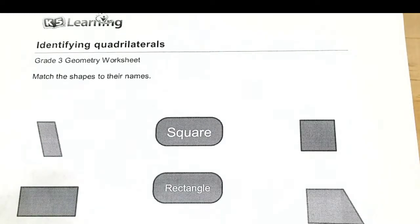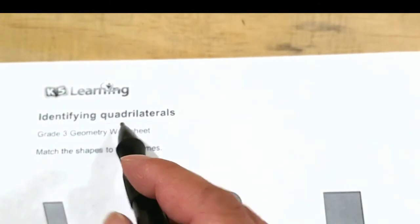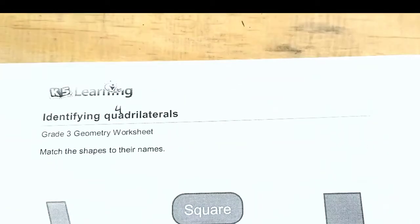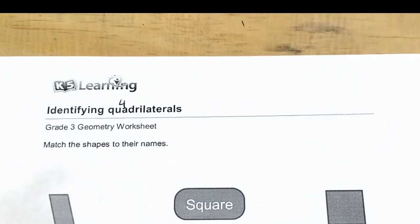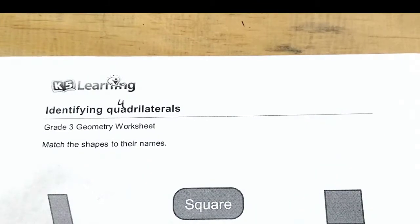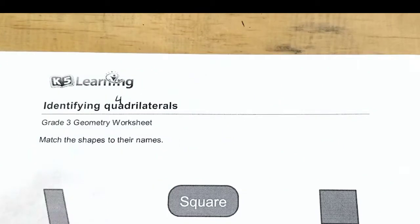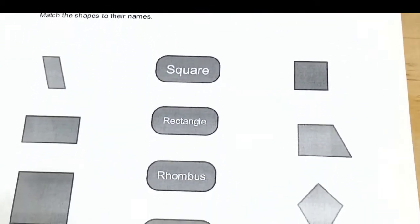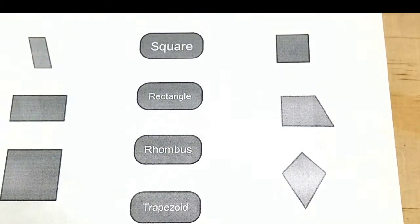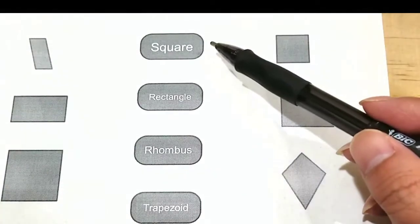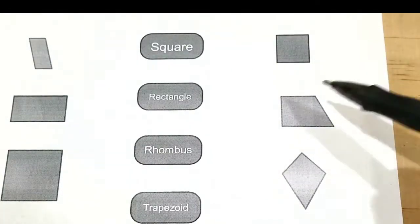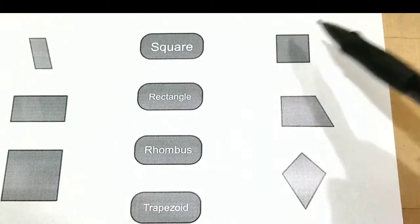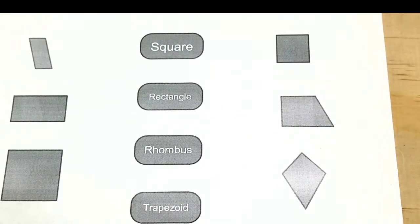Okay, for this video we're going to learn about quadrilaterals. The word quad means four, so any shape that has four sides and four angles are quadrilaterals. For example, our most popular one is the square. So a square has four sides and it has four angles, so it is a quadrilateral. And that's an example.